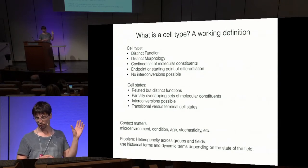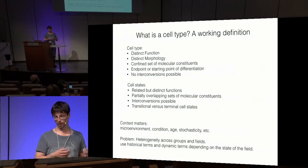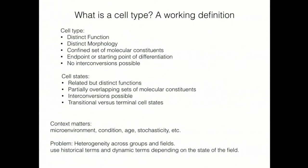There is heterogeneity across groups and fields. People from more traditional biology fields such as evolutionary biology or immunology tend to think of cell types in functional terms — for example, classical ontology. We need to go back to those discussions and adjust our notion of cell type accordingly, so we can communicate across fields.